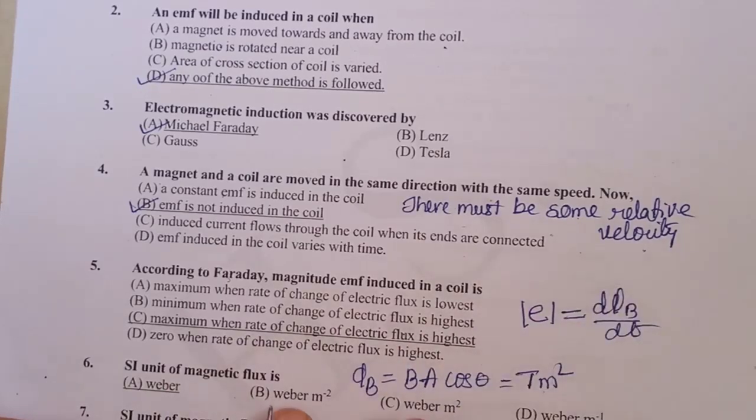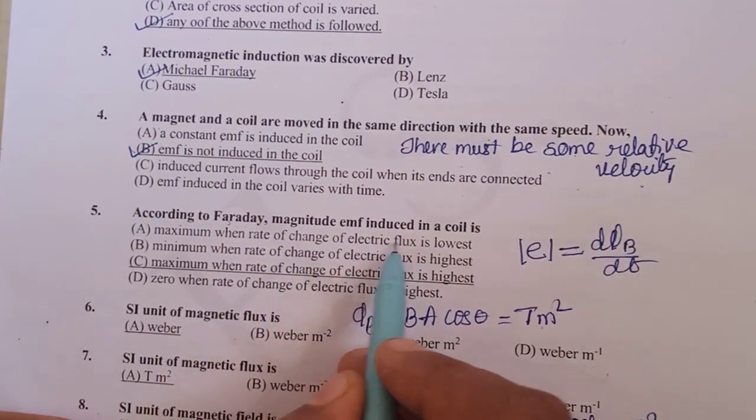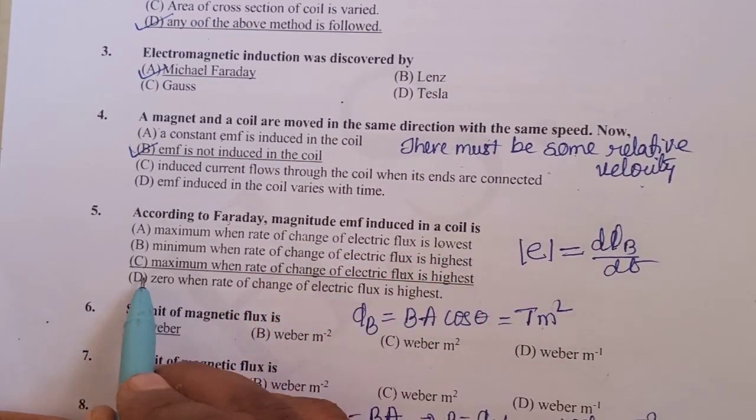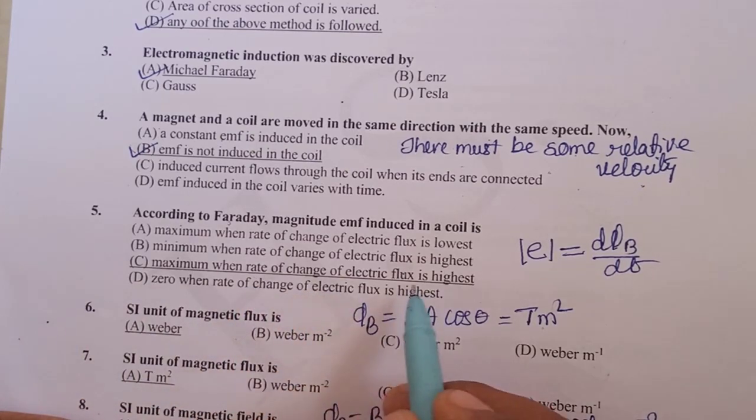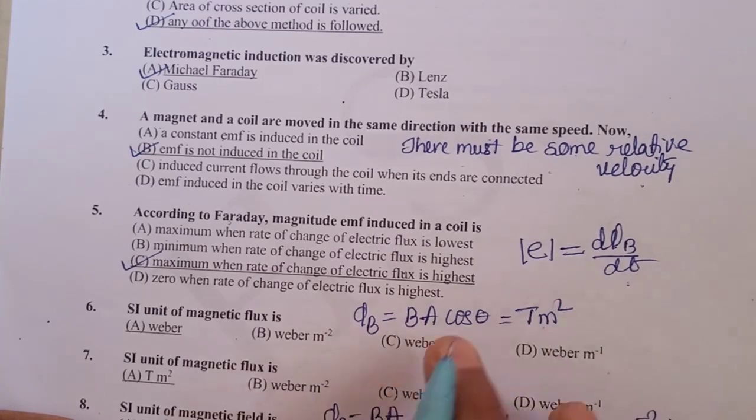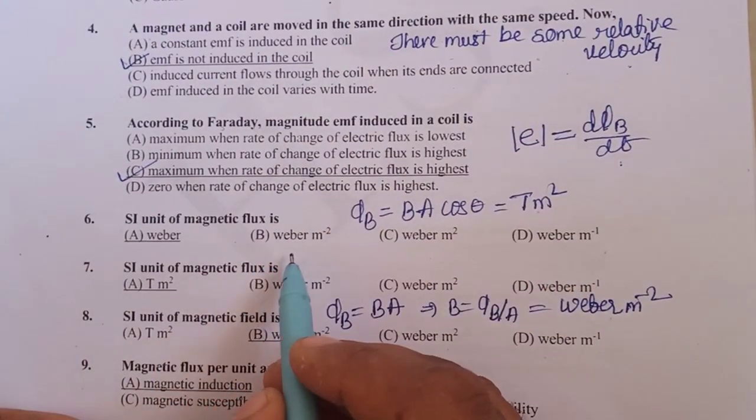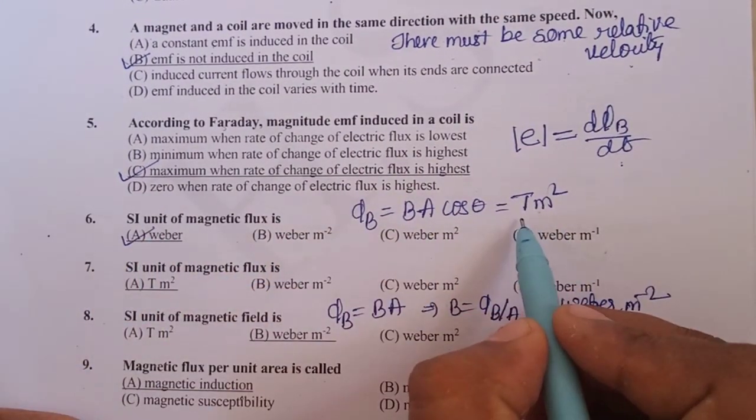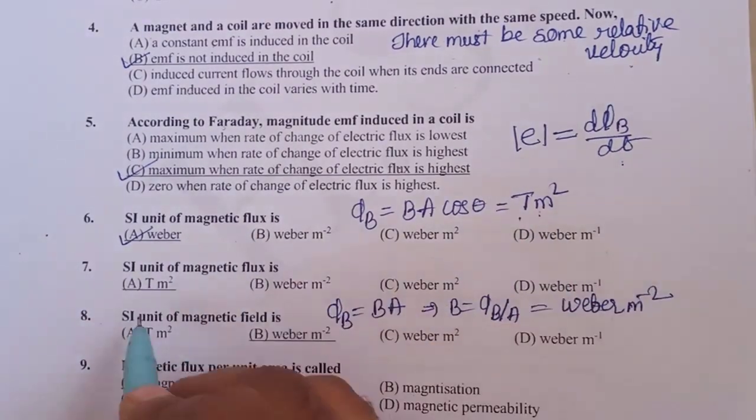According to Faraday, magnitude of EMF induced in a coil is maximum when the rate of change of electric flux is highest. That is given by E is equal to dΦ by dt. SI unit of magnetic flux is Weber, and one more unit you can write is Tesla meter square.